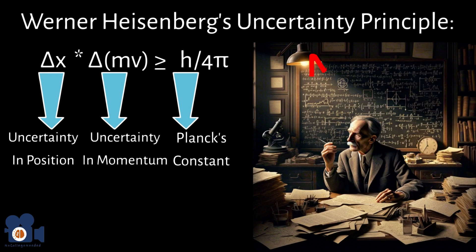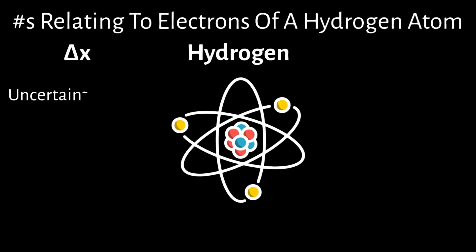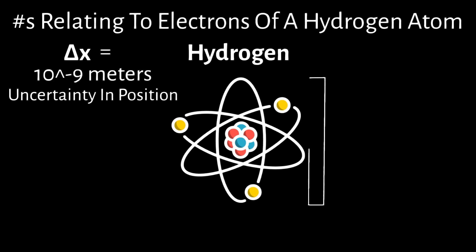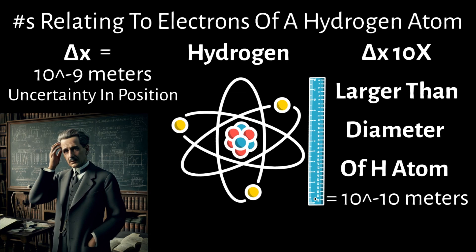I won't go into the derivation for this equation since I'm not a theoretical physicist, but if you plug in the numbers relating to the electrons of a hydrogen atom, you get the uncertainty of the position of the electrons that is 10 times larger than the diameter of the hydrogen atom. Therefore, we have no idea where it is. We can just give the probabilities of where it might be.